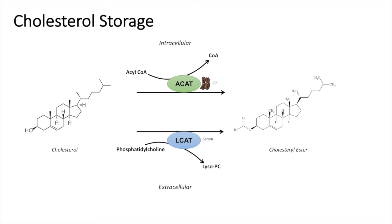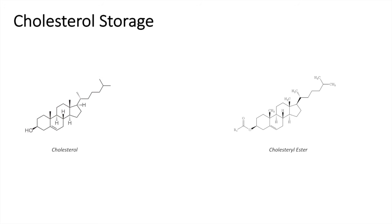Approximately 65% of plasma cholesterol is stored as cholesterol ester. Once cholesterol ester is stored, it can be converted back to cholesterol by an enzyme known as cholesterol esterase, which removes the acyl group and regenerates cholesterol in its active form. That was a quick look at the cholesterol synthesis pathway — I hope you found this video helpful. Thank you so much for watching and have a great day.